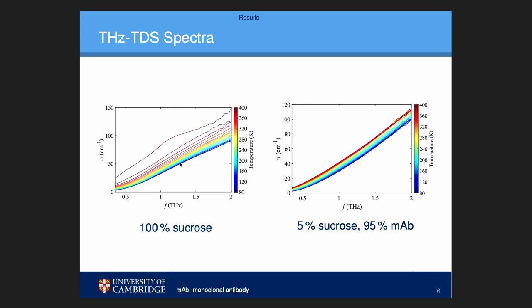The only real difference is that last spectrum at very high temperatures in the sucrose sample, which is actually where the sucrose starts to crystallize. We can see a crystalline mode at around 1.3 terahertz.